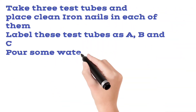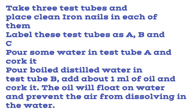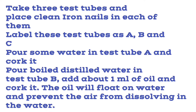Procedure: take three test tubes and place clean iron nails in each of them. Label these test tubes as A, B, and C. In the first test tube A, pour some water and close it with a cork.